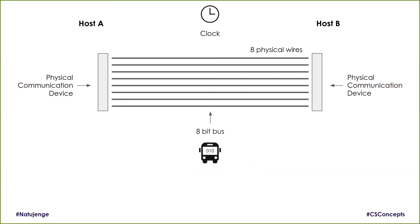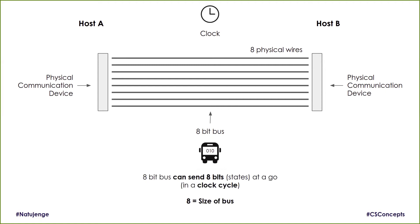These wires are what we call a bus. In this case, we have an eight-bit bus — a bus that can carry eight bits at a time. This means that eight bits, or eight states, can be powered on in the same clock cycle.